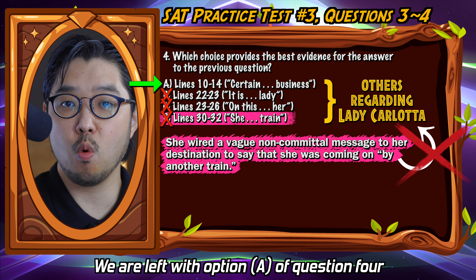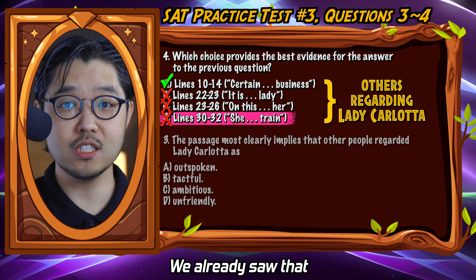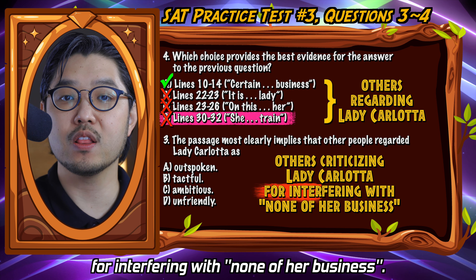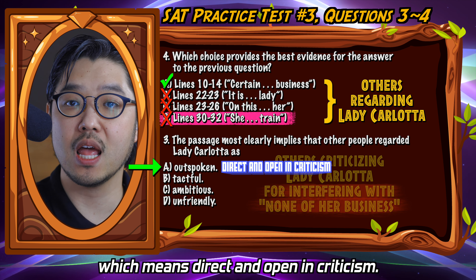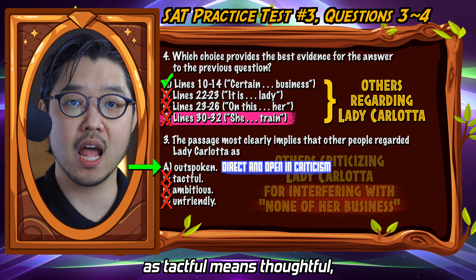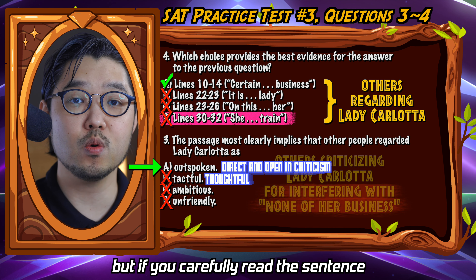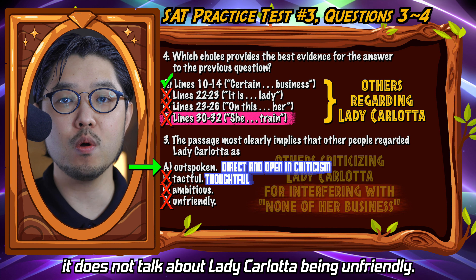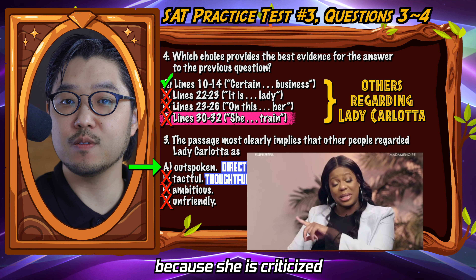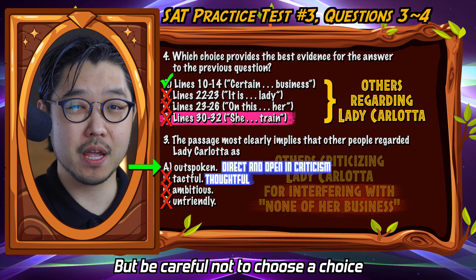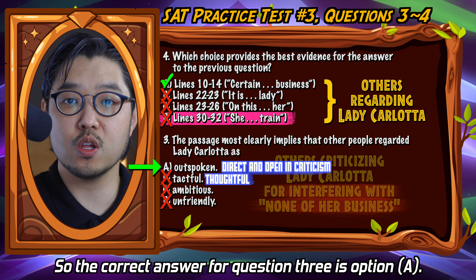We are left with option A of question four and can answer confidently that A is correct. Now we solve for question three. We already saw that other people are criticizing Lady Carlotta for interfering with none of her business. The only choice that fits is option A, 'outspoken,' which means direct and open in criticism. The other choices are wrong: tactful means thoughtful, ambitious is not the case here, and unfriendly is a tricky one. If you carefully read lines 10 to 14, it does not talk about Lady Carlotta being unfriendly. Be careful not to choose a choice unless the passage explicitly tells you so. The correct answer for question three is option A.